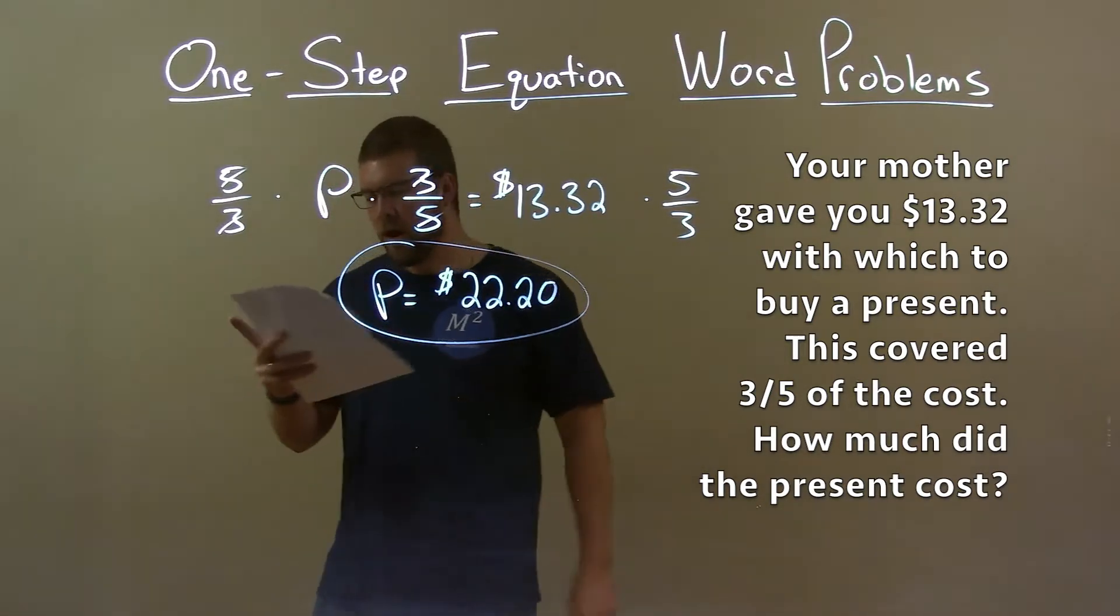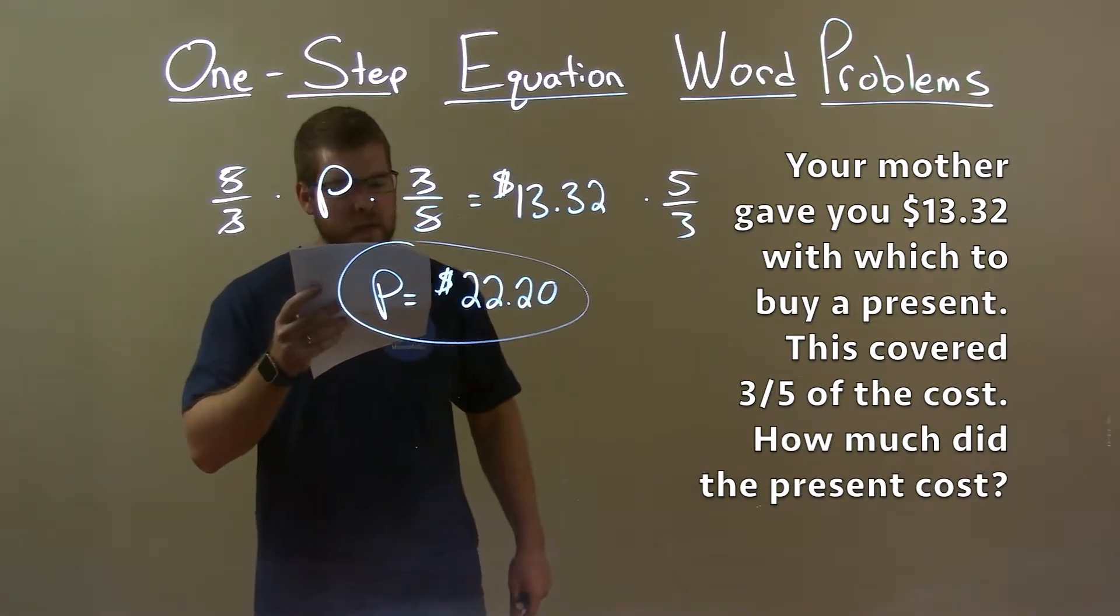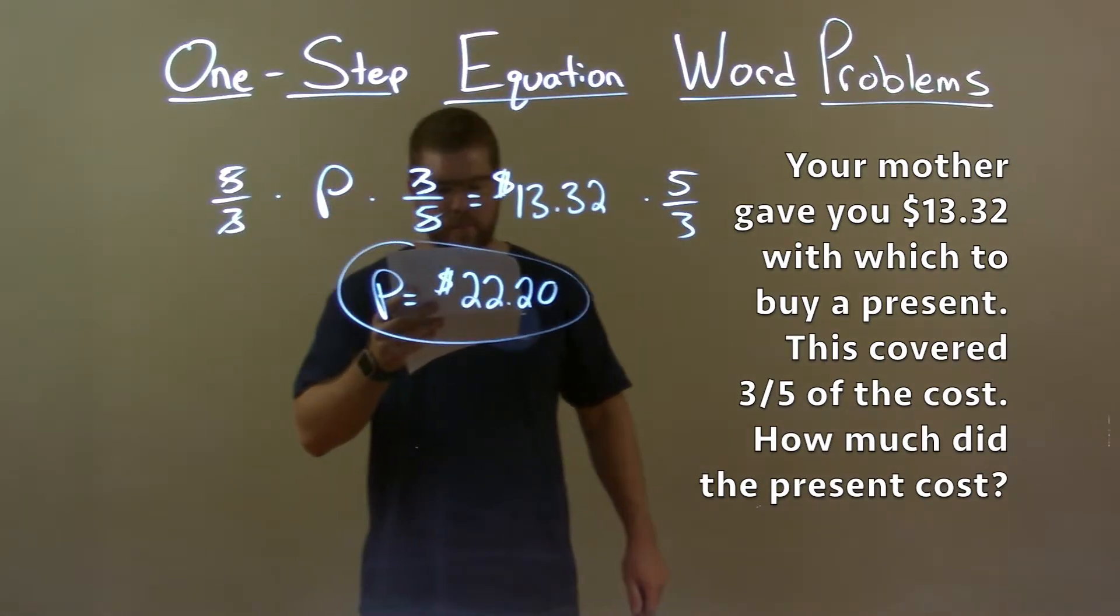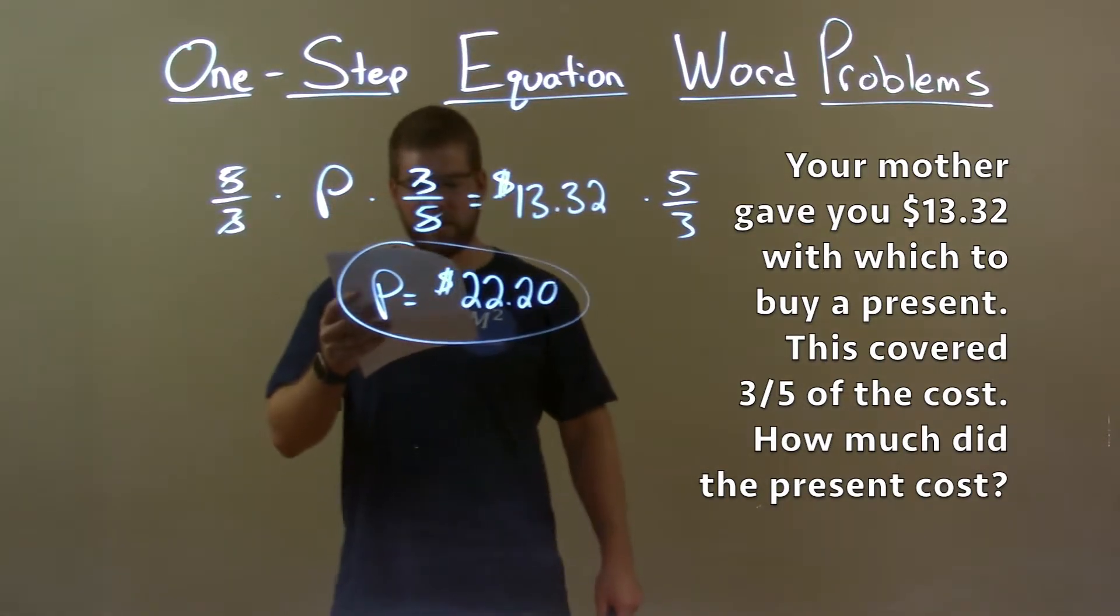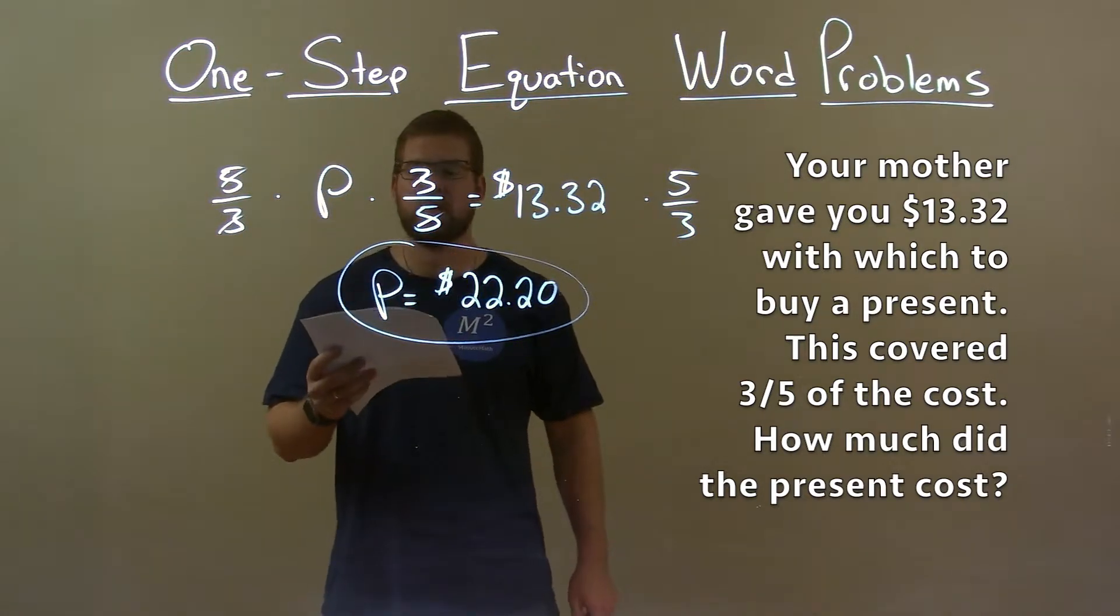Quick recap, we're given the word problem. Your mother gave you $13.32 with which to buy a present. This covered three-fifths of the cost. How much did the present cost?